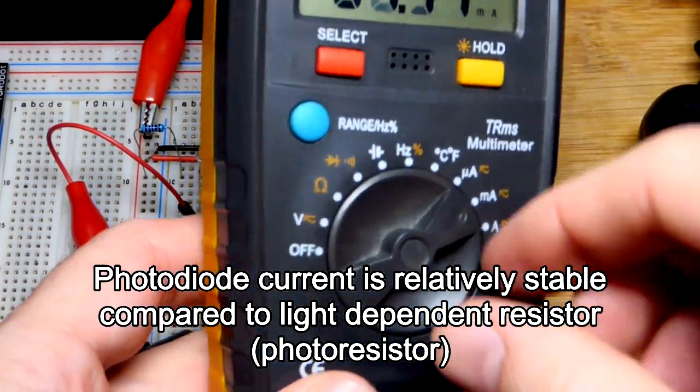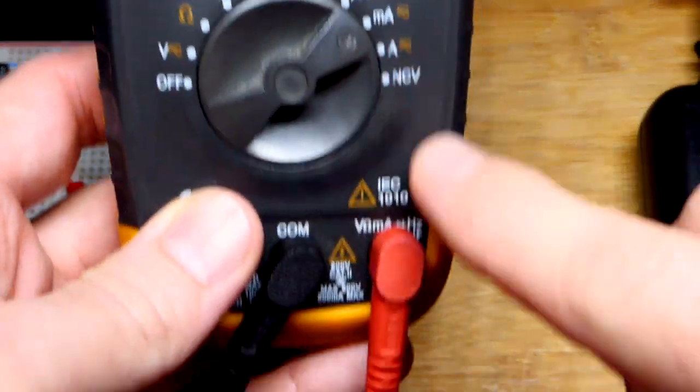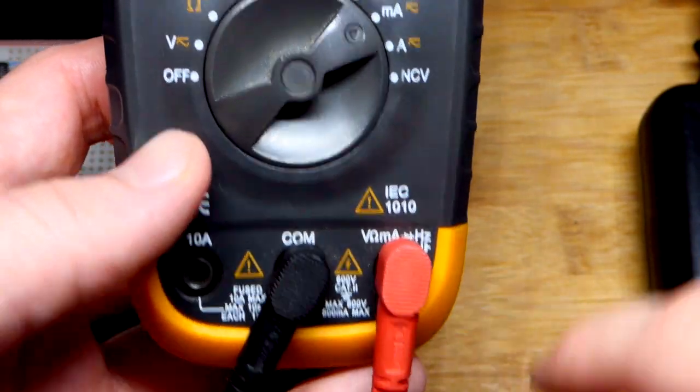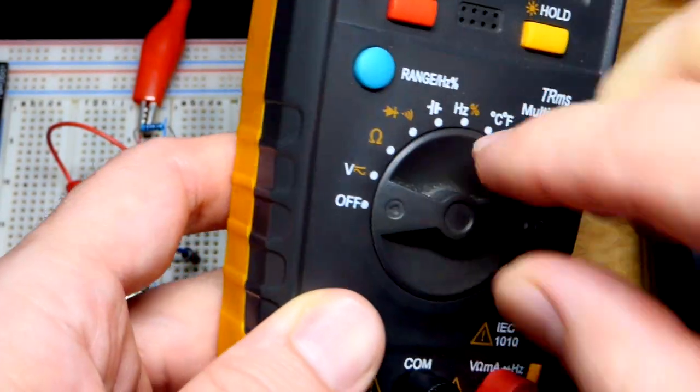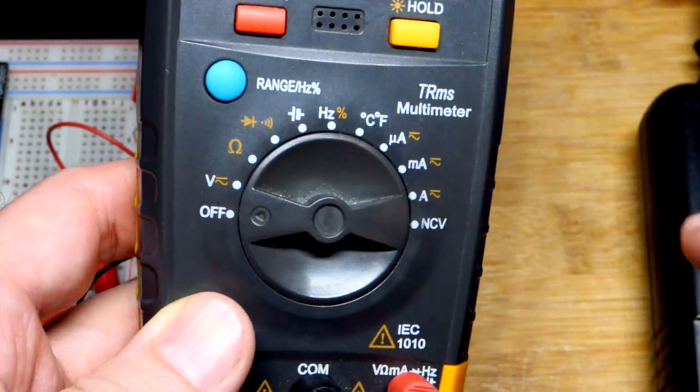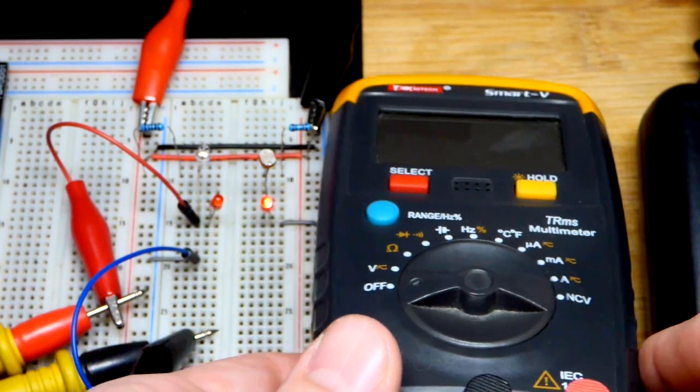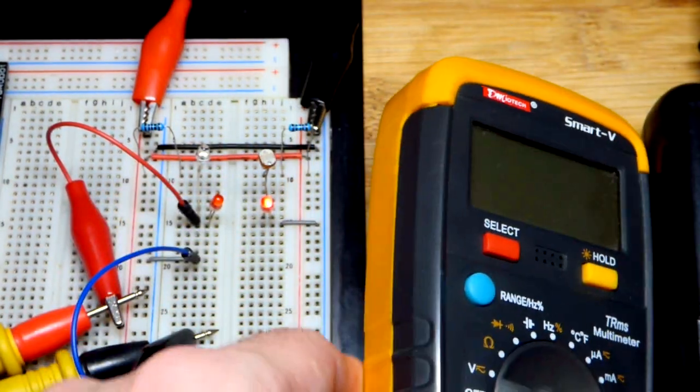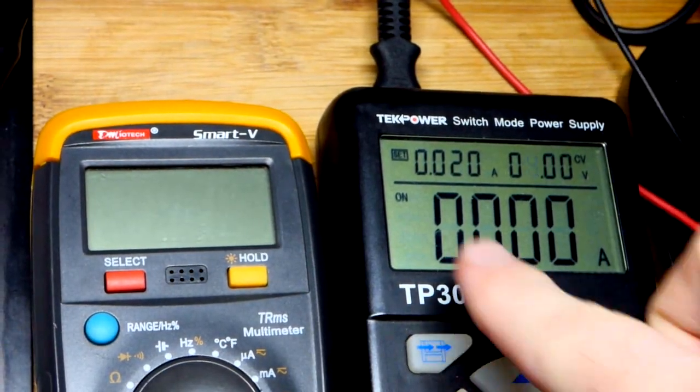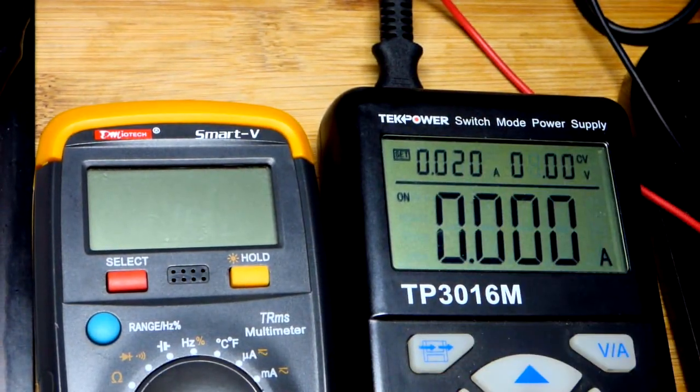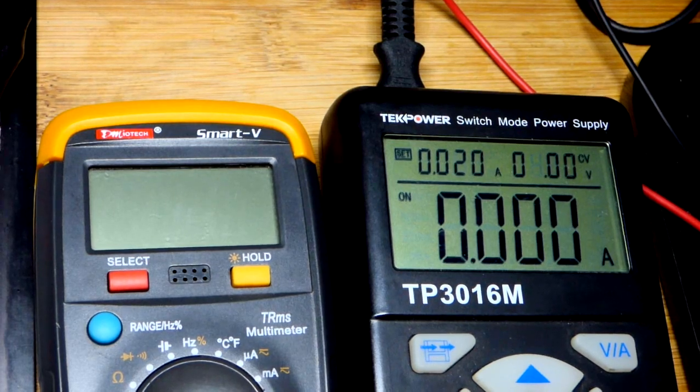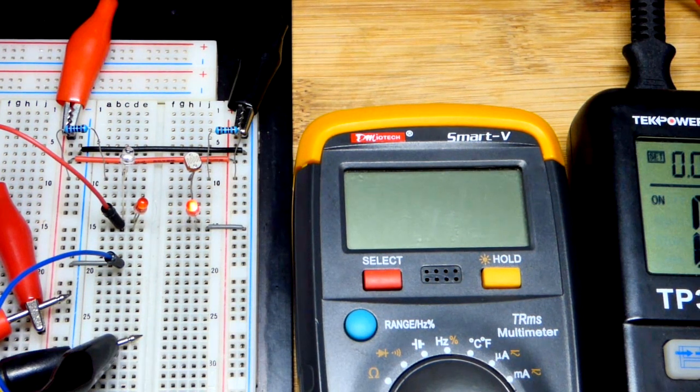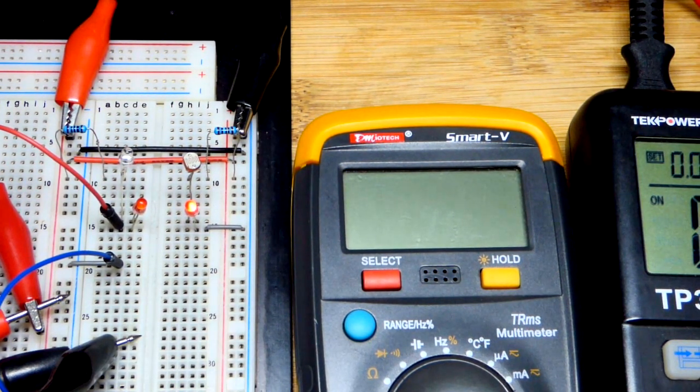Make sure you turn off the multimeter when you're done. We had it set to milliamps. Turn off the meter when you're done, definitely get it off of measuring current, because if you try to measure a voltage while it's set to current and you don't limit the current like this does because I set it at 20 milliamps when I'm dealing with LEDs, then you'll put too much current through the meter and blow a fuse. So get it off measuring current and turn it off completely.